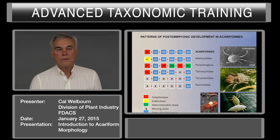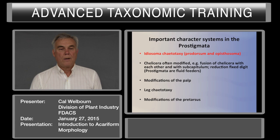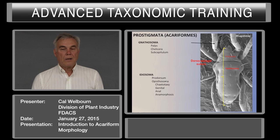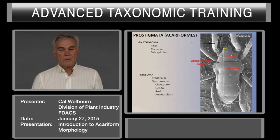Talking about important character systems in the Prostigmata: the idiosomal chaetotaxy is probably one of the most important sets of characters you need to learn. As we've said before, the mites are divided into the gnathosoma—which includes the palps, the chelicerae, the subcapitulum, and the mouth—and the idiosoma, which is divided into the prodorsum and the opisthosoma. There's a whole variety of different terminology used, but I'm only going to use prodorsum and opisthosoma.